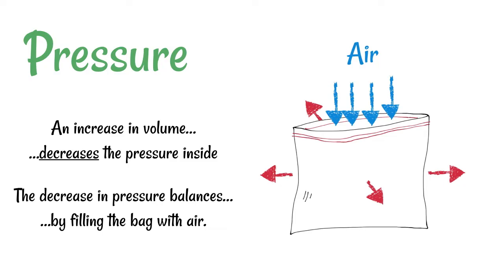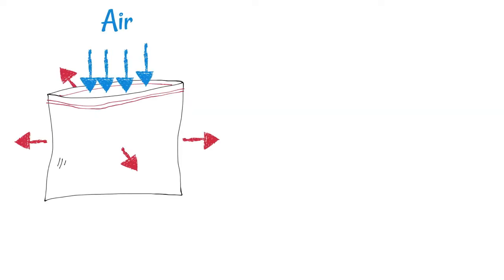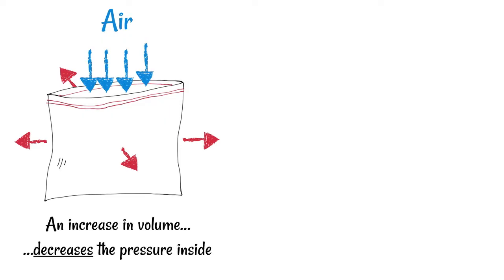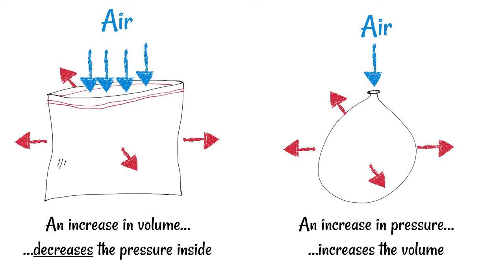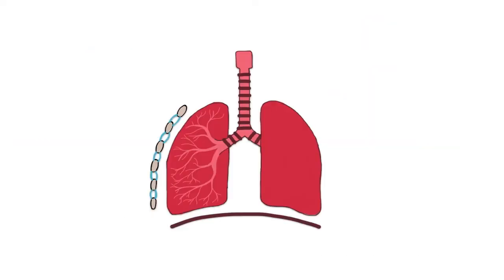That decrease in pressure immediately balances itself out by filling the bag with air to rebalance that pressure. Now let's contrast this with a balloon. With a balloon, we put air inside and the balloon will expand — an increase in pressure increases the volume. People often make the mistake of thinking that with your lungs you force air inside and that makes your chest expand, but that's not true. Your lungs behave the same as the food bag: we force it into a bigger shape and that forces the air to enter.